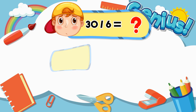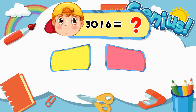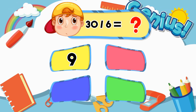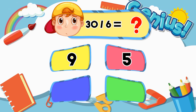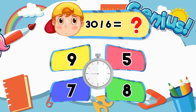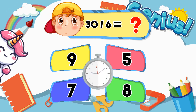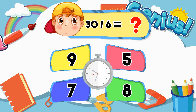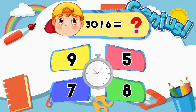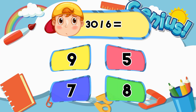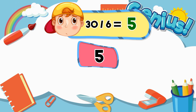What is thirty divided by six? Nine, five, seven, eight. Five.